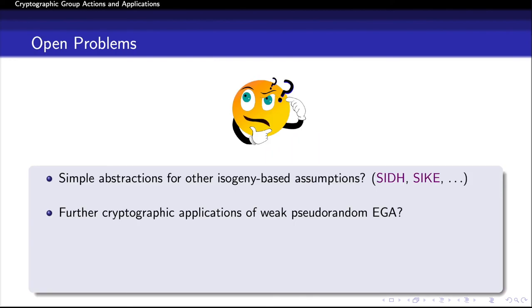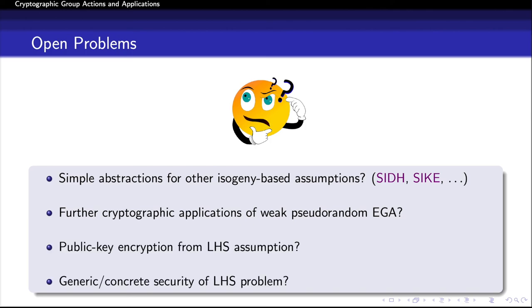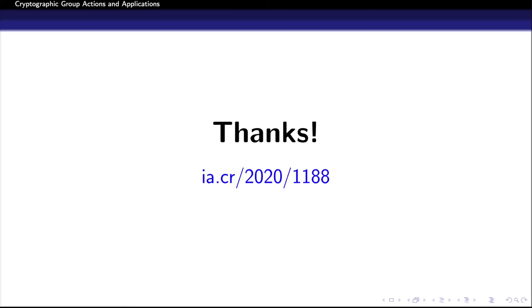I conclude the talk with a few interesting open problems. The first is to construct abstractions for other isogeny-based assumptions such as SIKE and OSIDH. Another interesting problem is to construct further cryptographic applications from a weak pseudorandom EGA, which in turn would imply new primitives from isogeny-based assumptions. The remaining two problems are related to the LHS assumption: constructing public key encryption from LHS — where the lack of structure to combine set elements seems to be a barrier — and investigating the security of the LHS problem in terms of both generic and concrete attacks. I encourage you to read the full paper, which is on ePrint. Thanks for your attention.